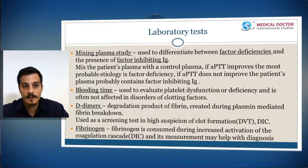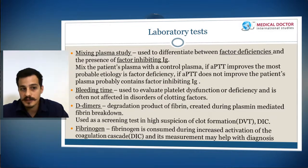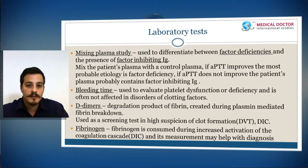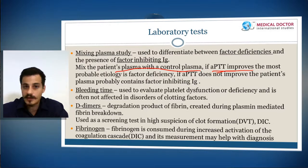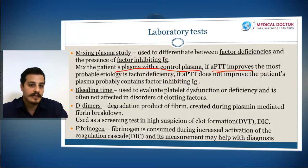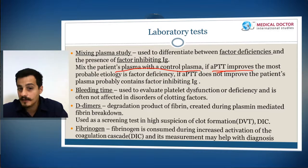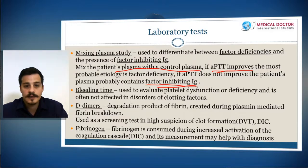A mixing plasma study is used to differentiate between a factor deficiency and the presence of antibodies that inactivate coagulation factors. The patient's plasma is mixed with control plasma and aPTT is retested. If aPTT improves, a factor deficiency is confirmed because the missing factor was supplied by the control plasma. If aPTT does not improve, an inhibitory antibody is likely present, as it would also inhibit the factor in the control plasma.